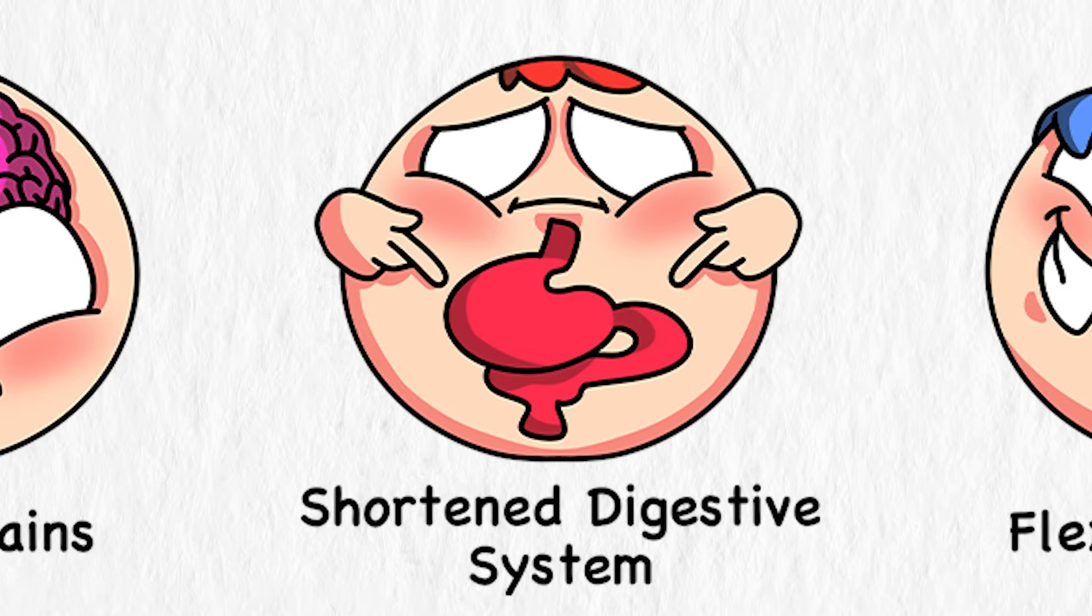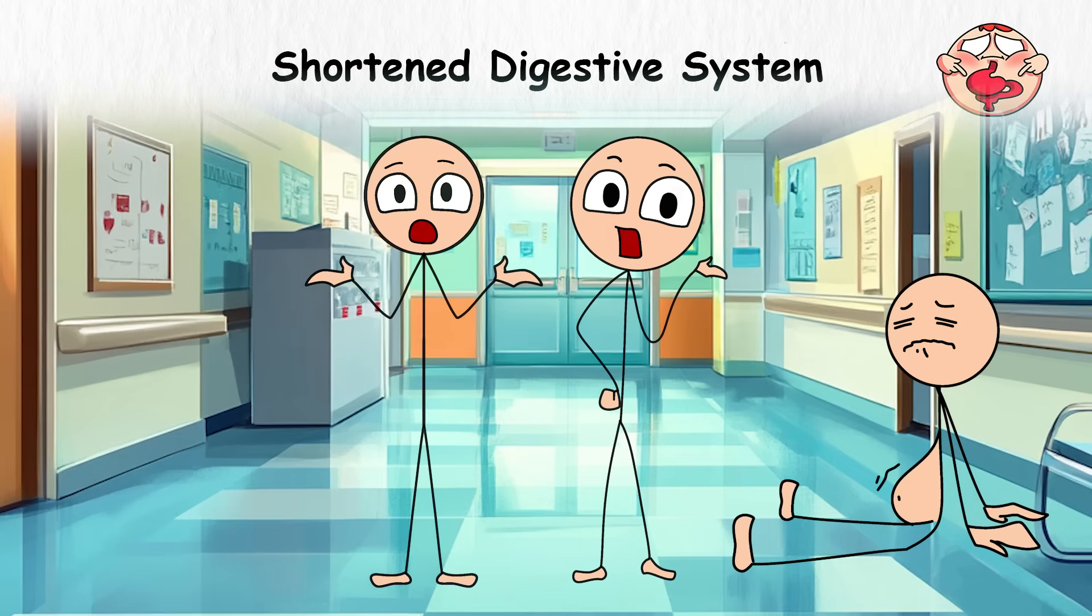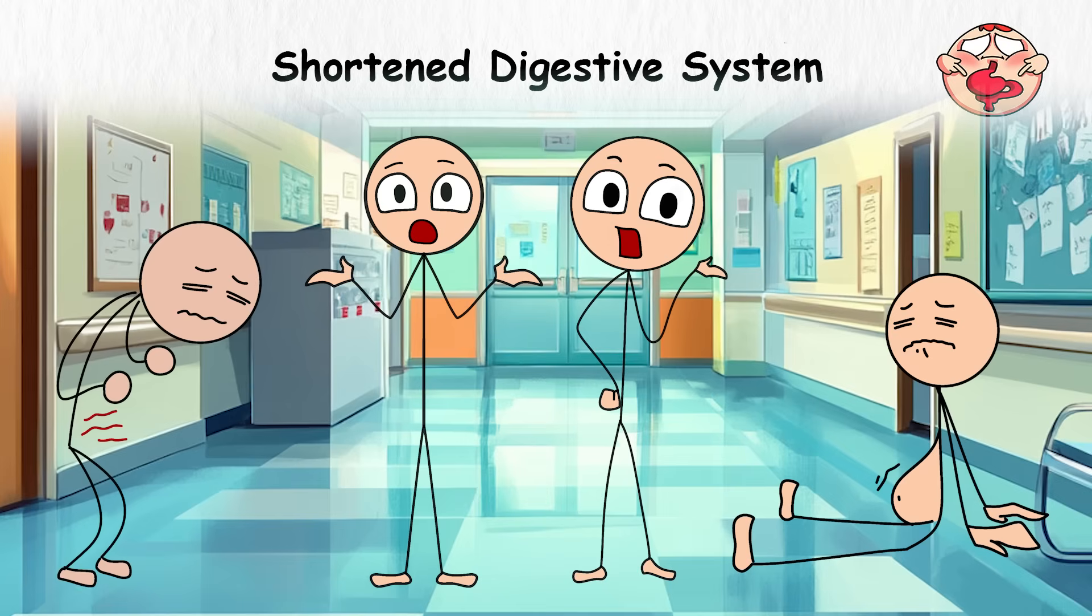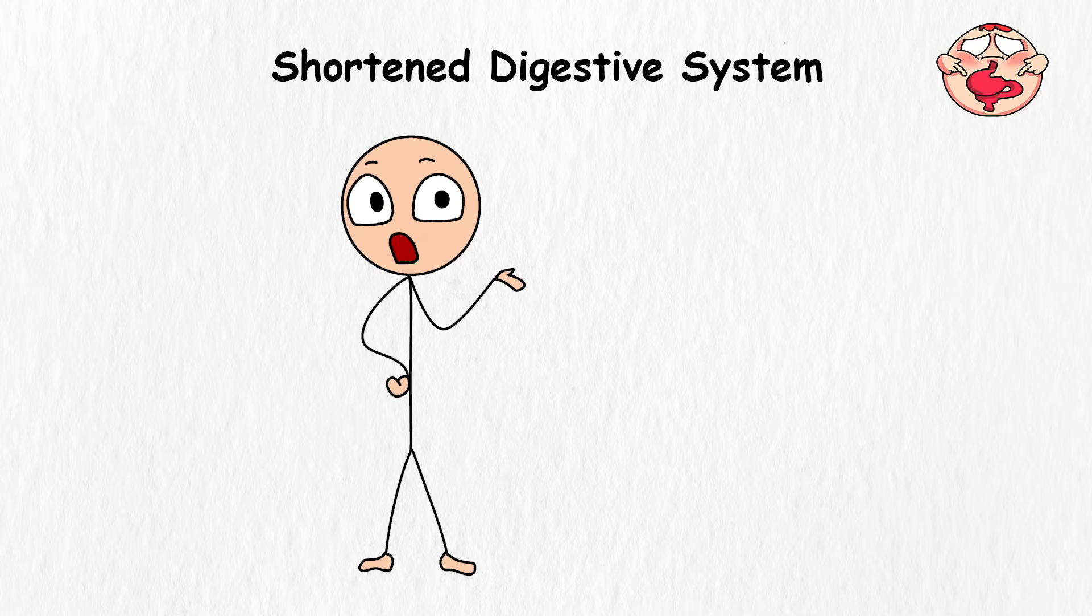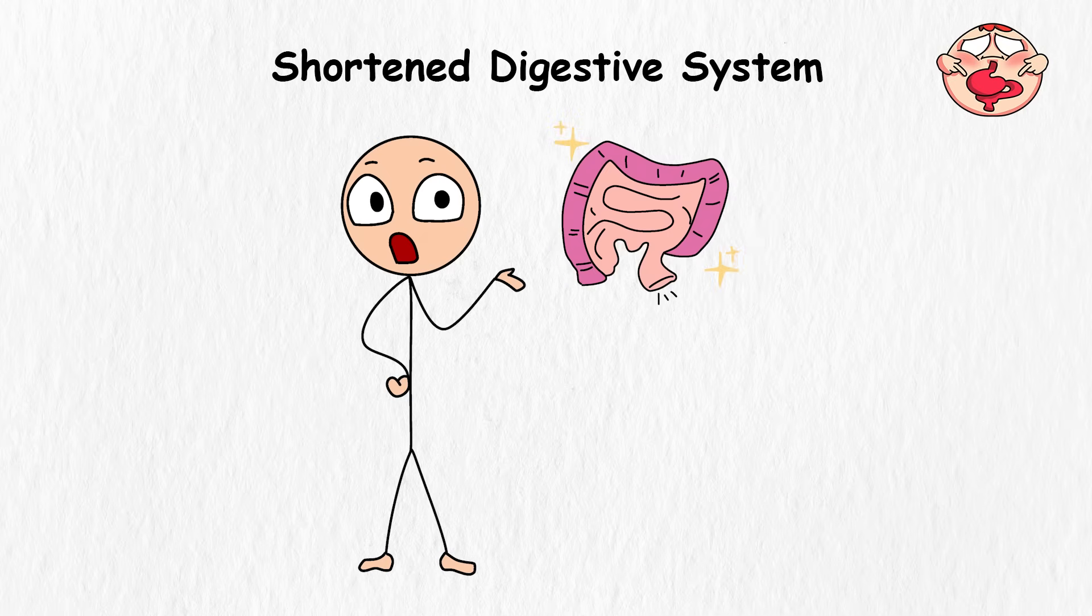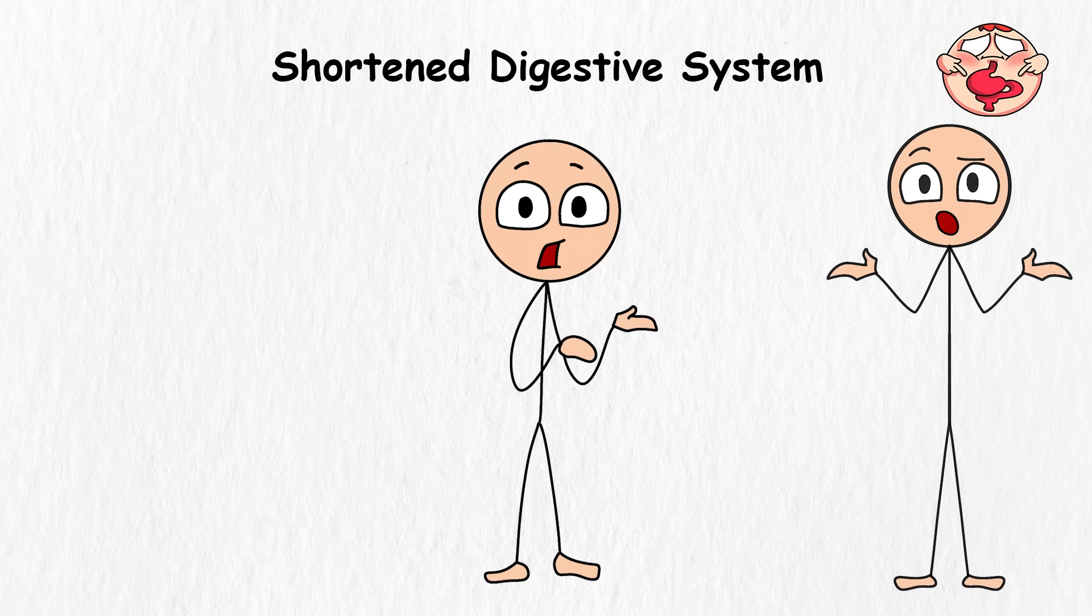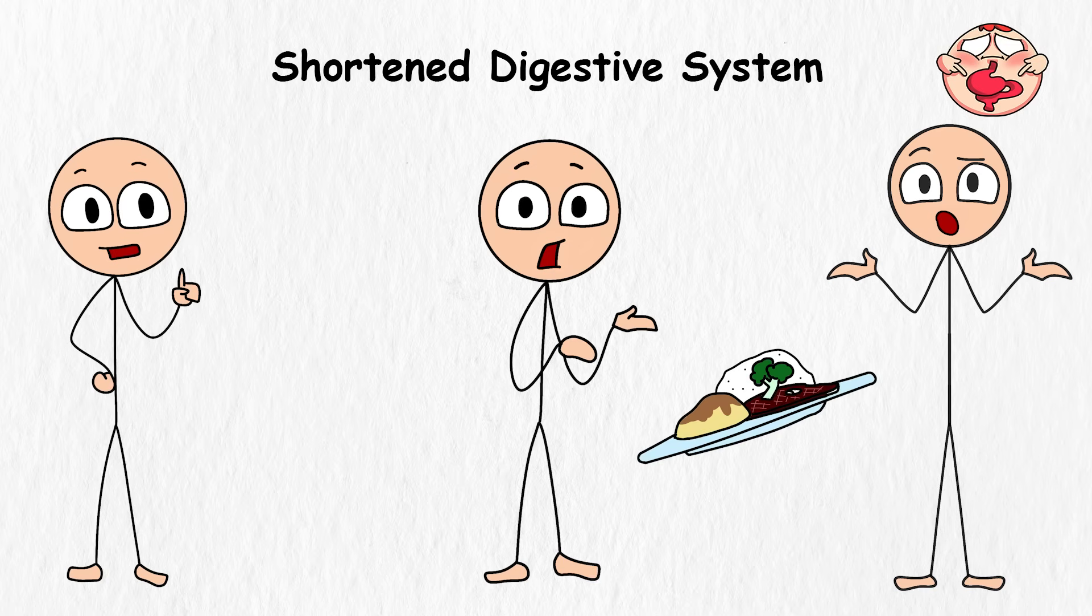Shortened Digestive System. Imagine a world where people never complain about bloating, digestion takes minutes instead of hours, and your stomach doesn't growl loudly during important meetings. In this futuristic world, the human digestive system has undergone an epic upgrade and is now a sleeker, shorter version that's more efficient than ever. Now, you might probably be wondering why something as ancient and essential as our digestive tract evolved this way. But the reality is, this evolutionary twist is probably way overdue.